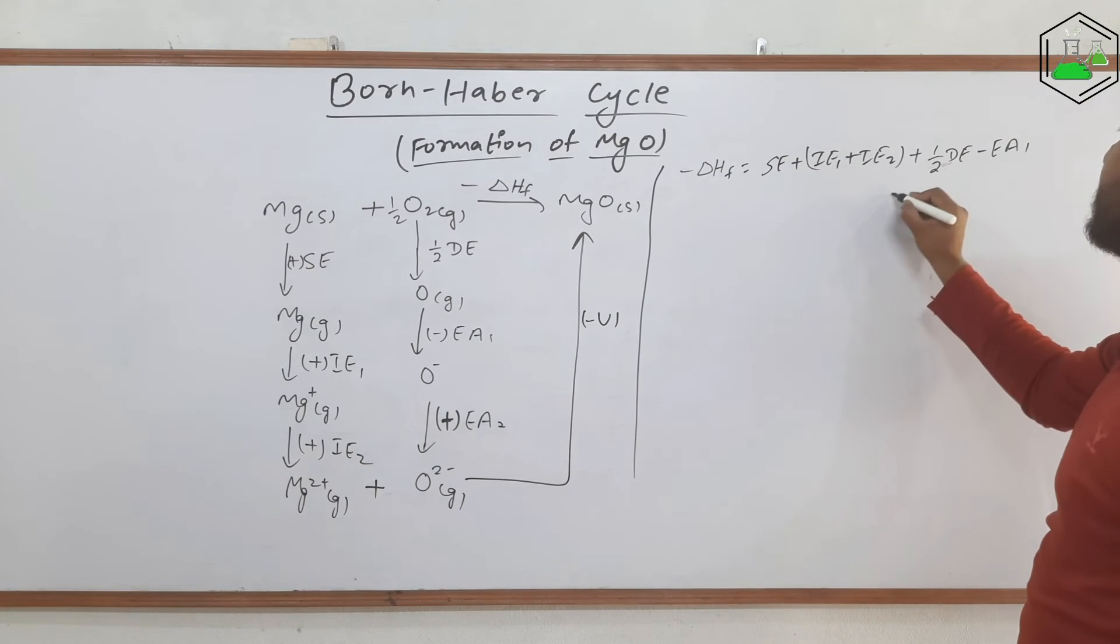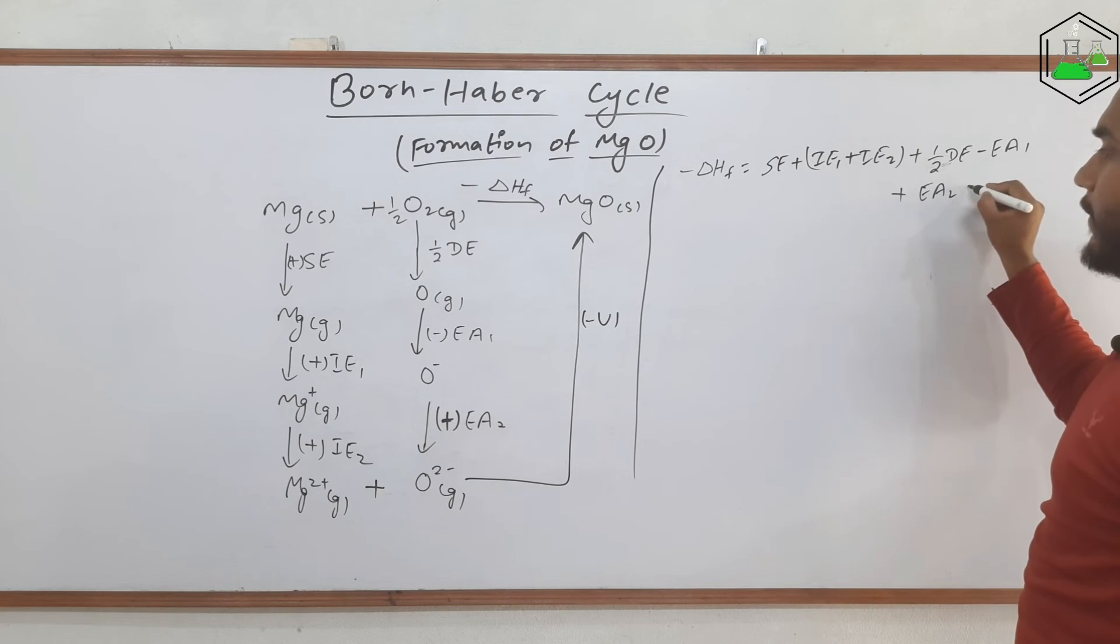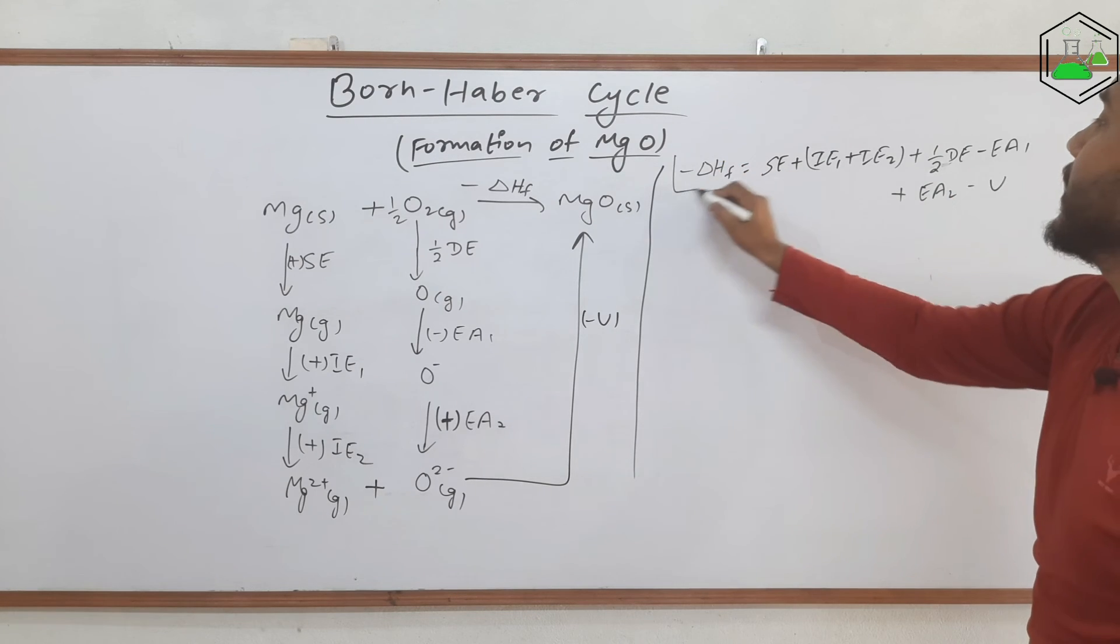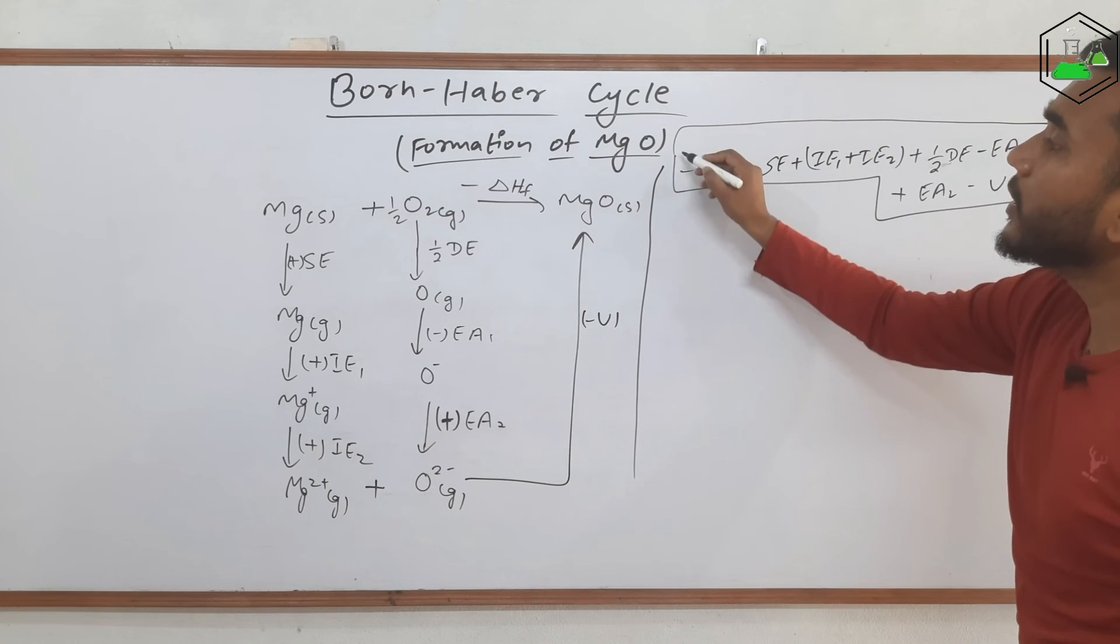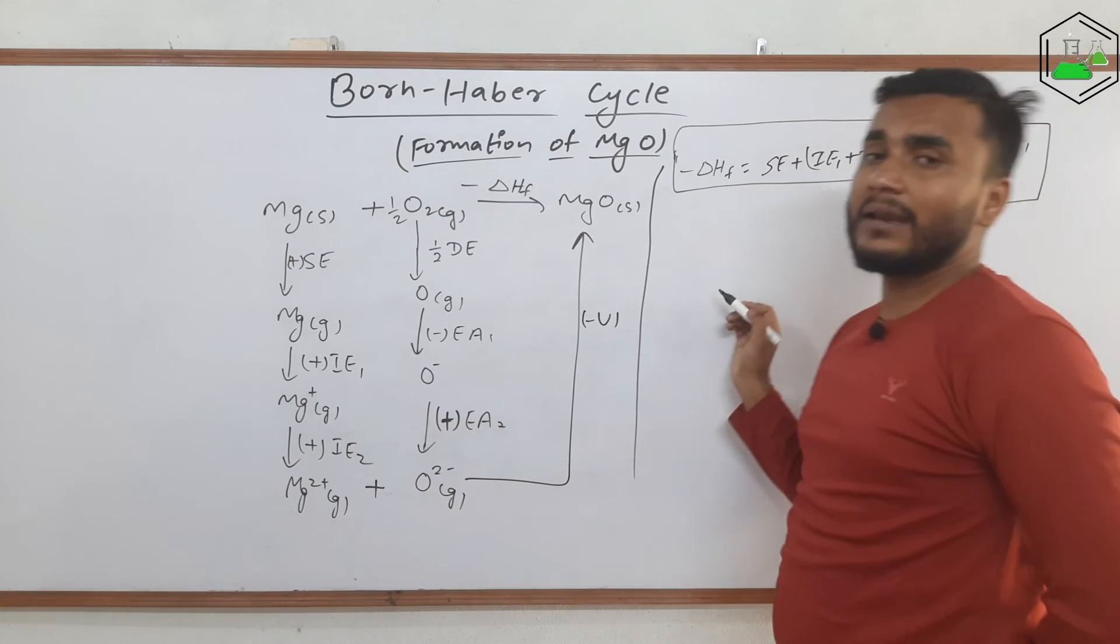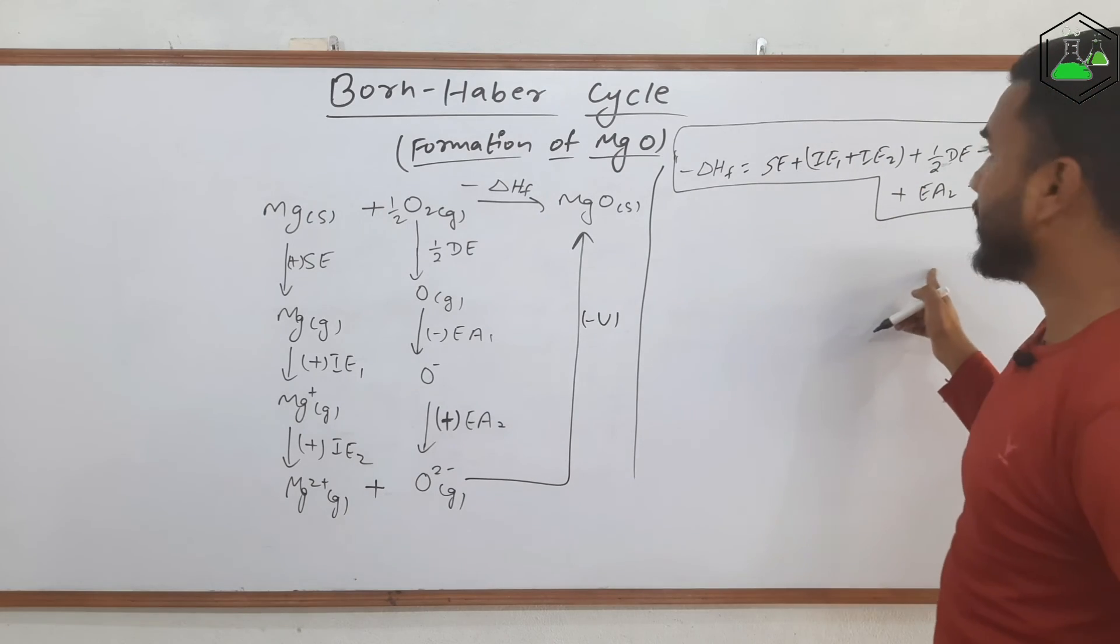This is 1, this is 2. EA1 plus EA2, you have to be very much careful over here. And finally minus U. This is the final expression for the formation of magnesium oxide compound according to Born-Haber cycle.